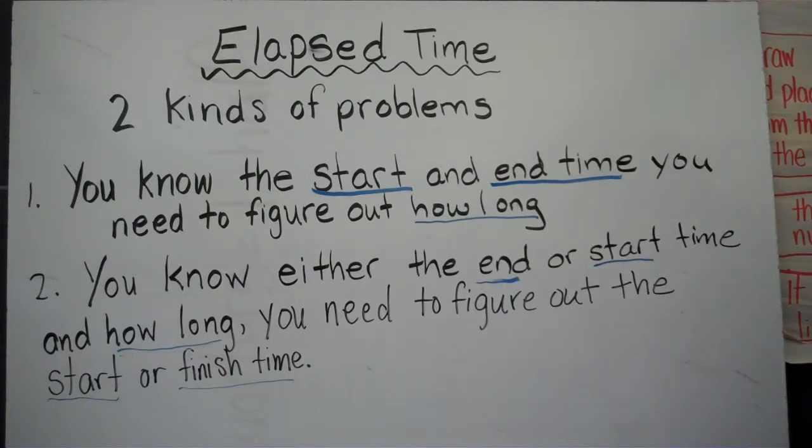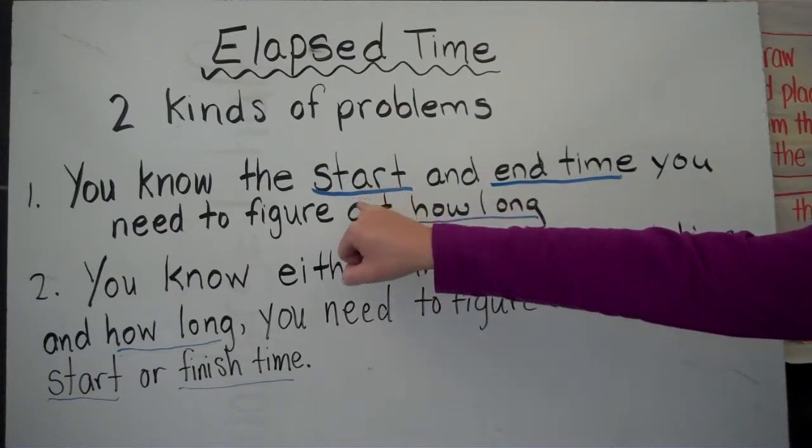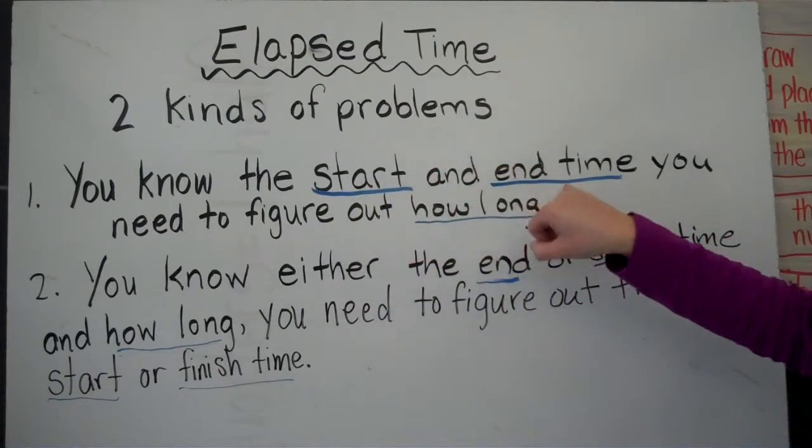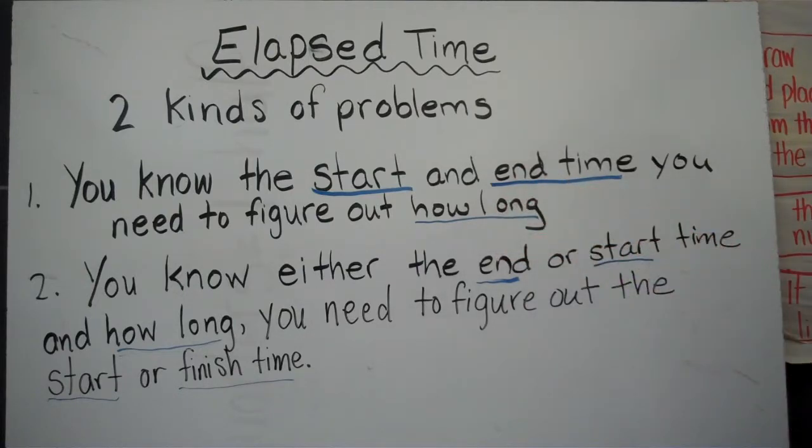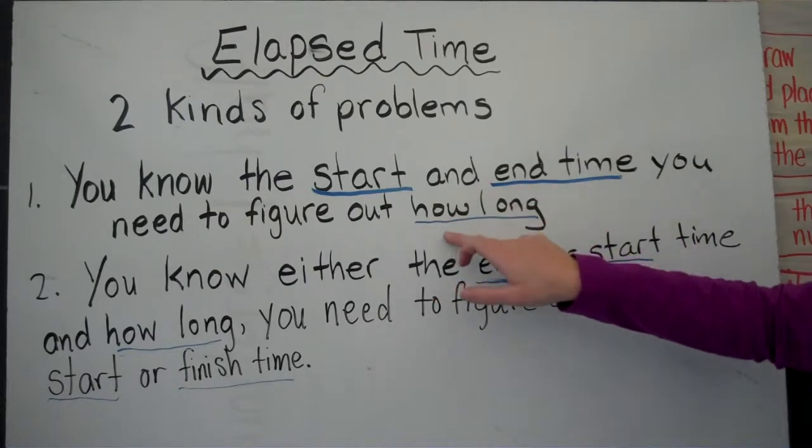There are two kinds of problems when talking about elapsed time that we're going to talk about today. The first one is when you know the start time and the end time. So you know that the party starts at 4:30, it's going to end at 7:30. How long is the party going to last? So you're figuring out how long something is going to last.